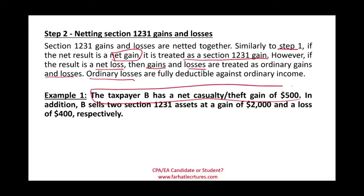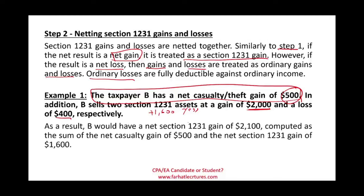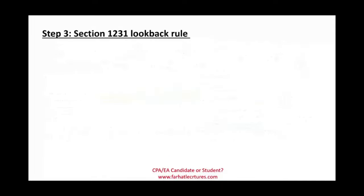For example: Taxpayer B has a net casualty gain of $500 from step one. In addition, B sells two Section 1231 assets — one at a gain of $2,000 and one at a loss of $400. The net from the other assets is $1,600. Combined with the $500 casualty gain, Taxpayer B has a total Section 1231 gain of $2,100.